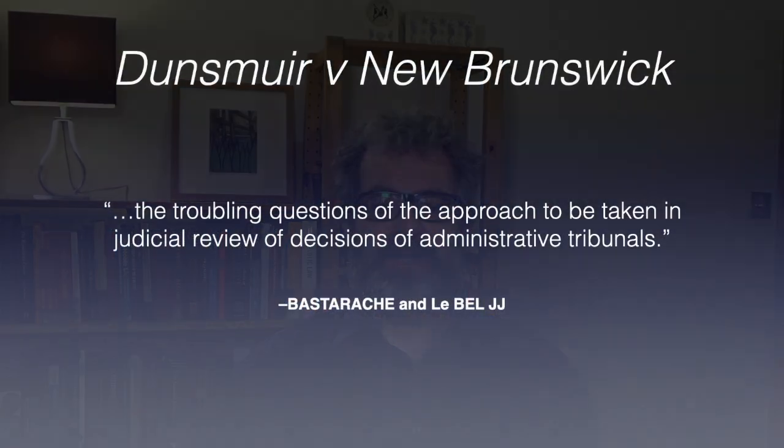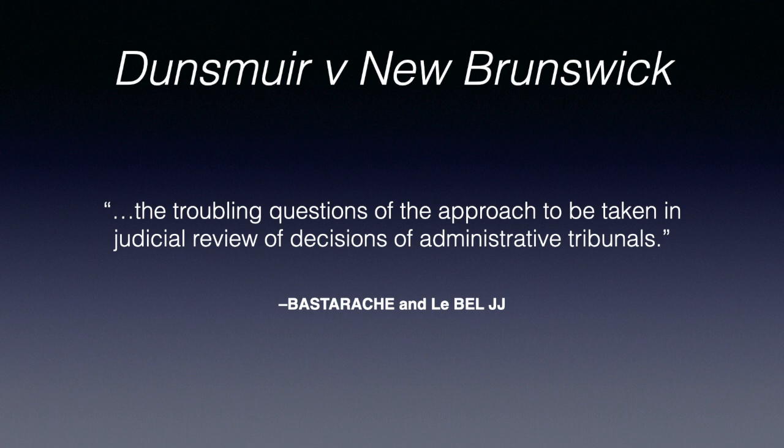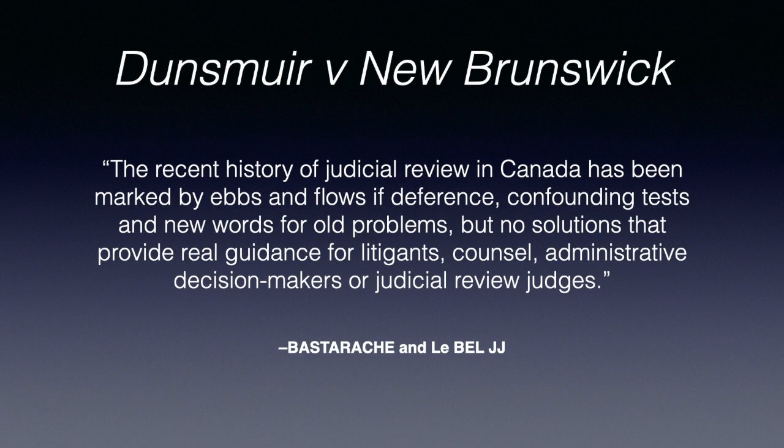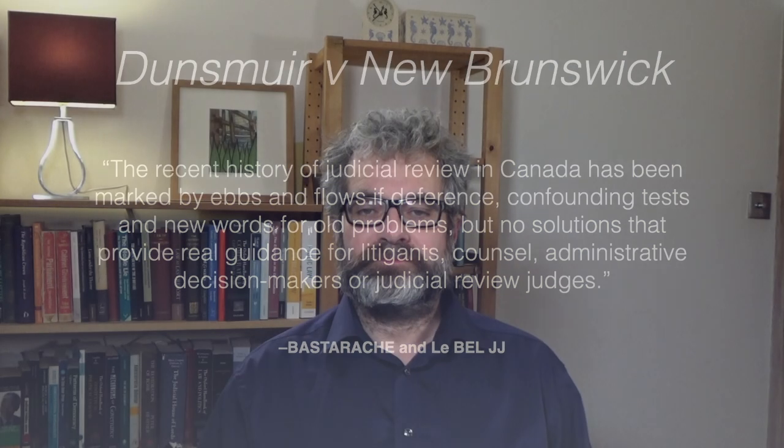Until Vavilov, Dunsmuir was the leading case on determining the appropriate standard of review. It is useful to start with what the majority in Dunsmuir saw as the problem with the state of the law as it then was. The judgment of the majority begins at paragraph one in portentous terms. It speaks of the troubling questions of the approach to be taken in judicial review of decisions of administrative tribunals. The recent history of judicial review in Canada has been marked by ebbs and flows of deference, confounding tests and new words for old problems, but no solutions that provide real guidance for litigants, counsel, administrative decision makers or judicial review judges. In response to these challenges, Dunsmuir sought to simplify the approach to substantive review of administrative action in two ways.